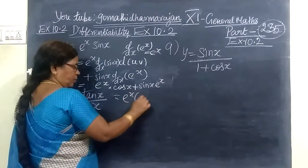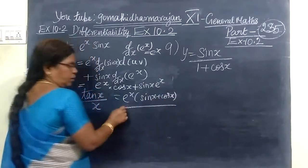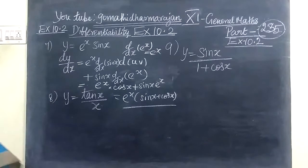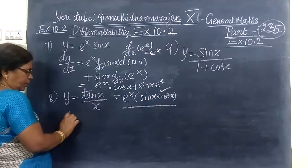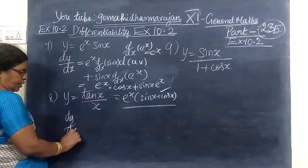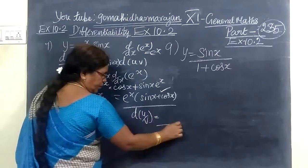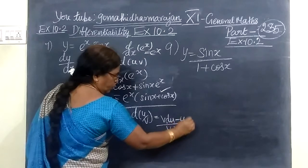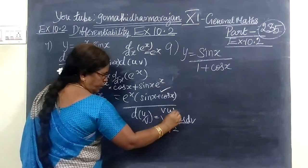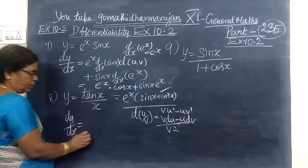So you take e power x common. The answer for this is e power x into (sin x plus cos x). So this is equal to e power x(sin x + cos x). So coming to the next question.